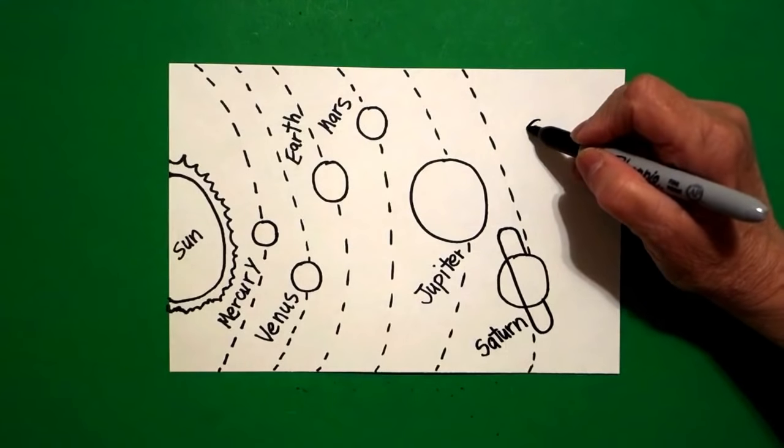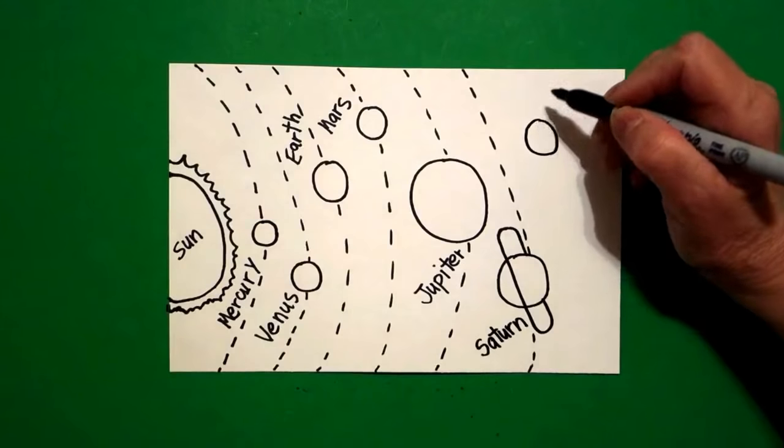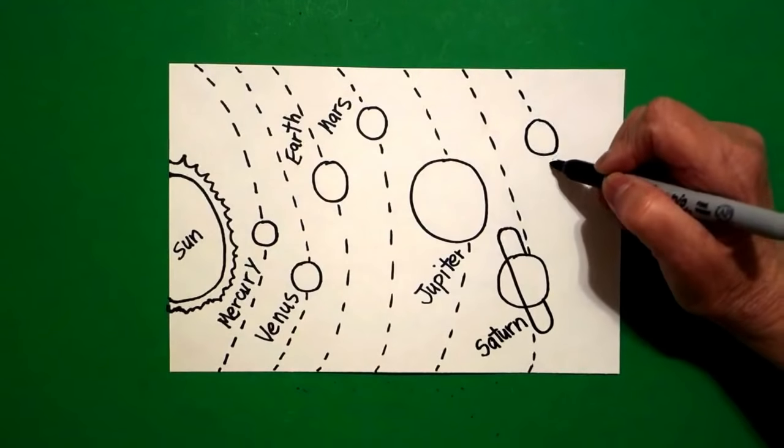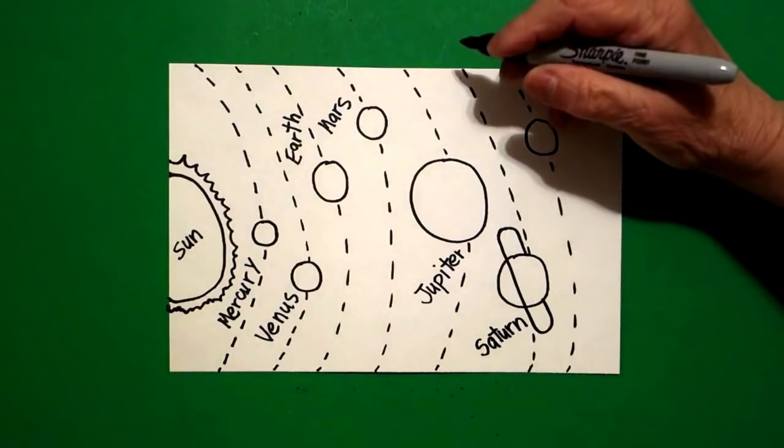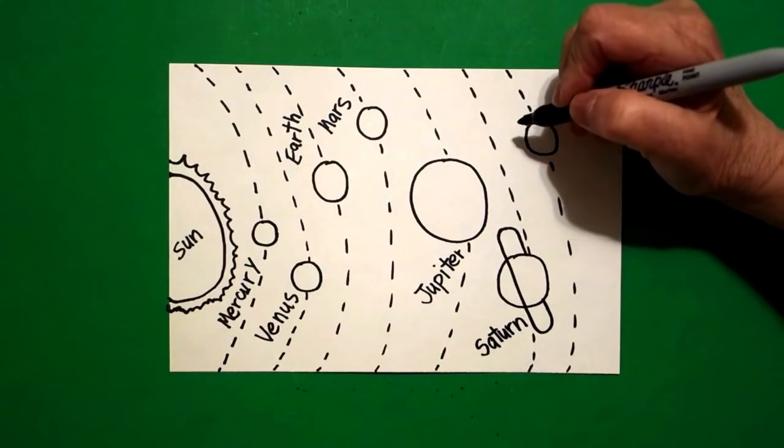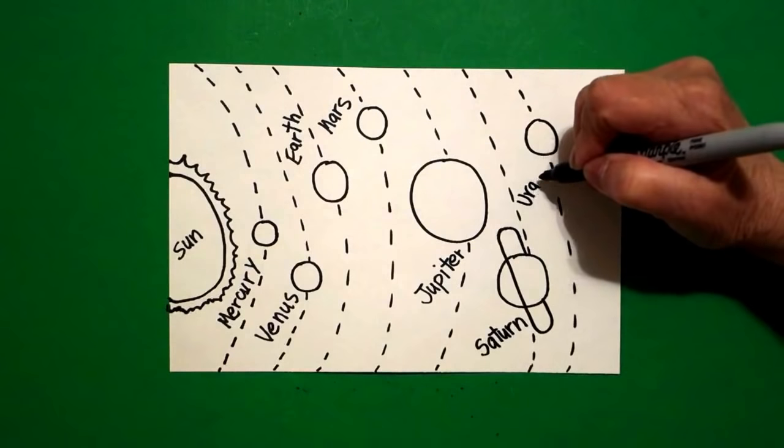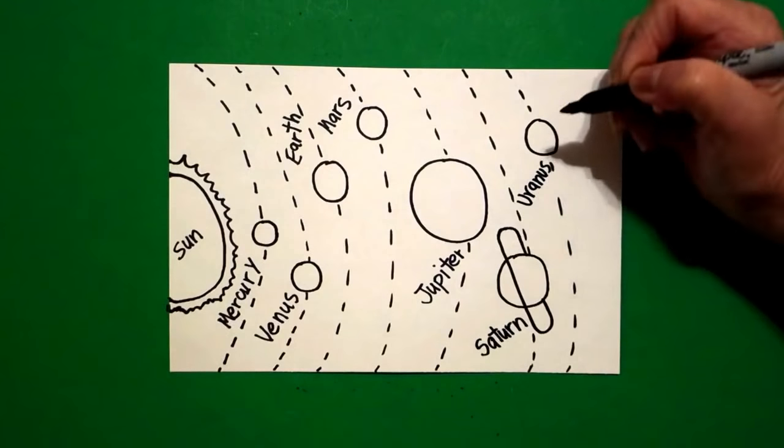Now I go back to a little Earth-sized circle. Draw my dotted line. And this is Uranus. U-R-A-N-U-S.